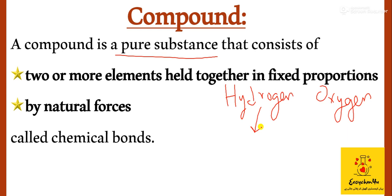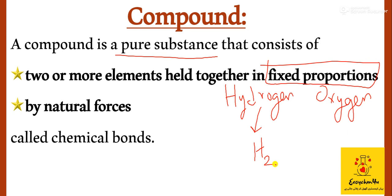These two elements react together in fixed proportions. If we want to make water, two hydrogen atoms come from the hydrogen element and one oxygen atom comes from the oxygen element — a ratio of two to one. So water is a compound.